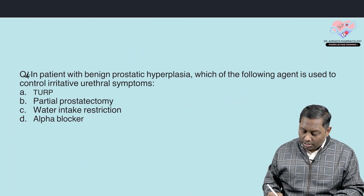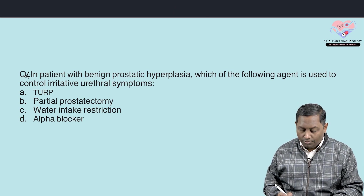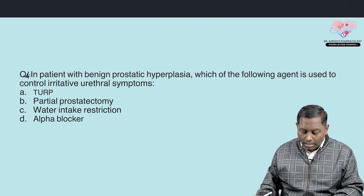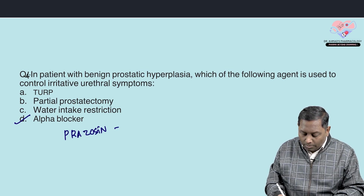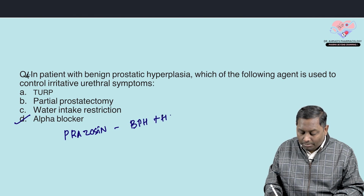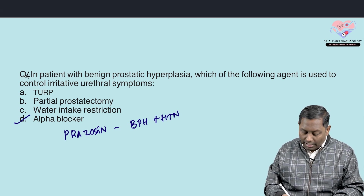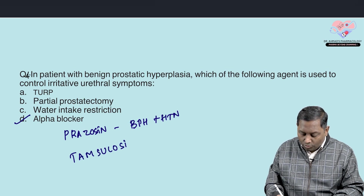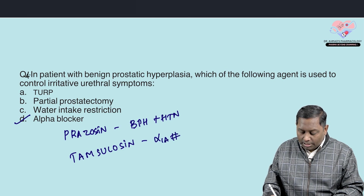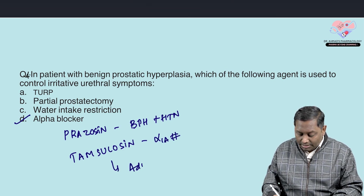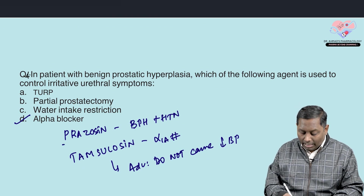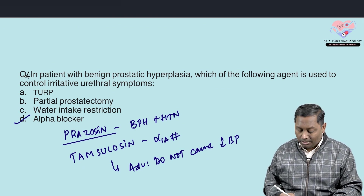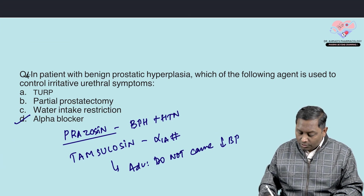In a patient with benign prostatic hyperplasia, which drug is used to control irritative urethral symptoms? We use alpha blocker drugs. Prazosin is preferred if BPH is combined with hypertension. However, if there is only BPH without hypertension, we use tamsulosin or silodosin — these are alpha-1A blockers. Their advantage is that they do not cause postural hypotension, unlike prazosin which causes a sudden fall in blood pressure. So for BPH only, tamsulosin is the drug of choice.